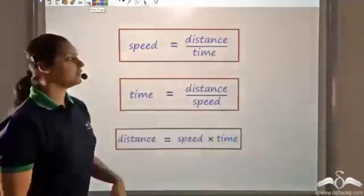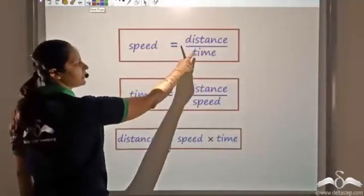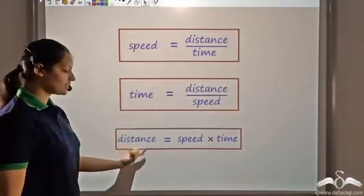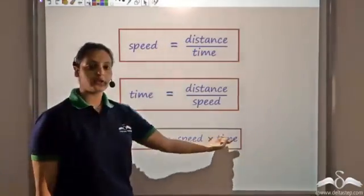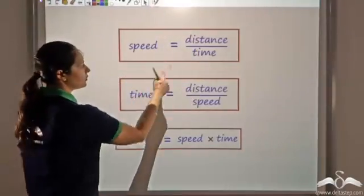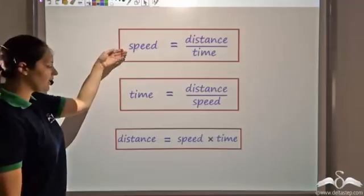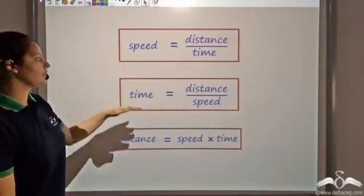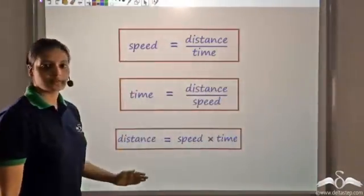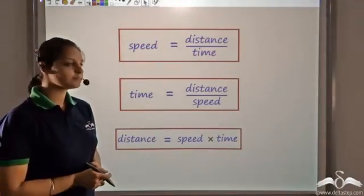From this same formula, you can calculate distance if you know speed and time: distance equals speed multiplied by time. Similarly, you can find time: time equals distance divided by speed. So you can find speed, time, or distance — just remember one formula and derive the other two from it.